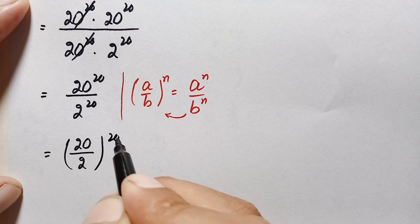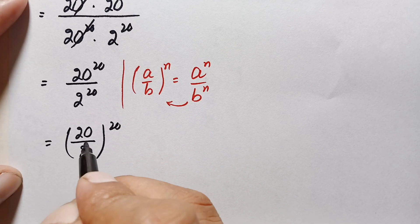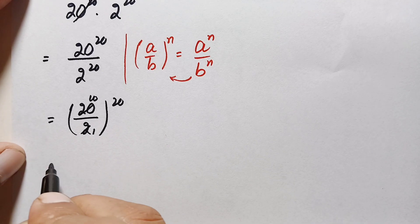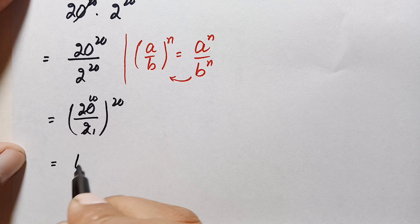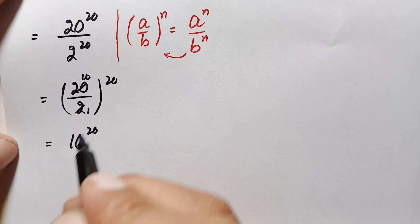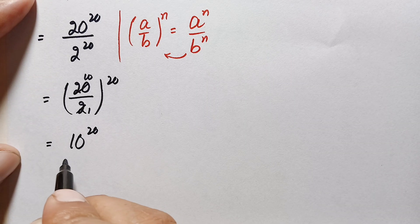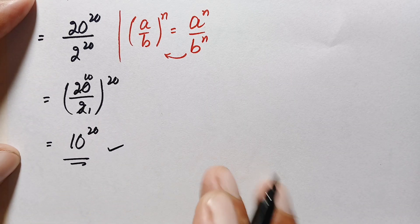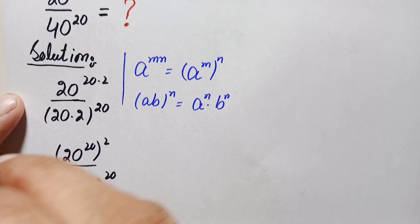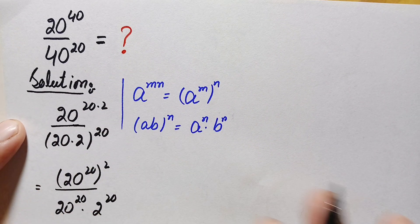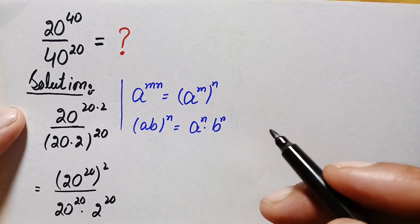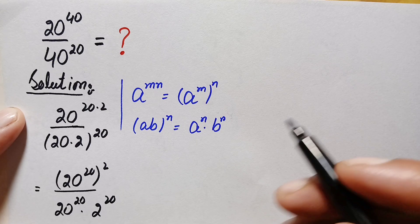20 divided by 2 is 10, so this becomes 10 raised to power 20. Therefore 10 raised to power 20 is our final answer and simplified value of this problem. Now I will solve this problem using the second method.